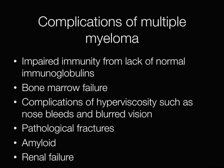Having seen the systemic effects of myeloma and how it may present, the complications are fairly self-evident. These include impaired immunity, bone marrow failure, the complications of hyperviscosity such as nosebleeds and blurred vision, pathological fractures, amyloid, and renal failure.